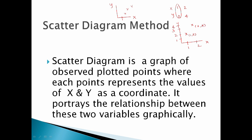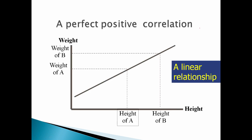So this is the relationship graphically plotted. Now the first type is perfect positive correlation. The perfect positive correlation has a correlation value of 1. You have to draw the line exactly through all the points.